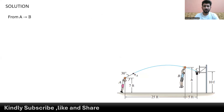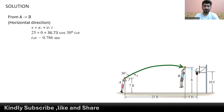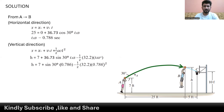Now that we have the initial velocity, we can find the height h at point B. We let the ball travel from point A to point B. In the horizontal direction, the initial position is 0 and the final position is 25 feet, giving the time from A to B as 0.786 seconds. Using the vertical equation of motion with the known time, gravity, and initial position of 7 feet, we find height h equals 11.5 feet.